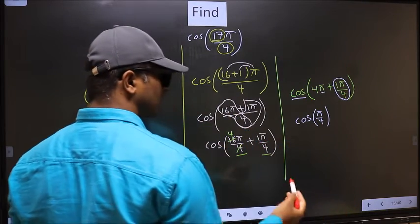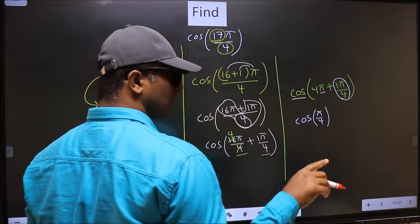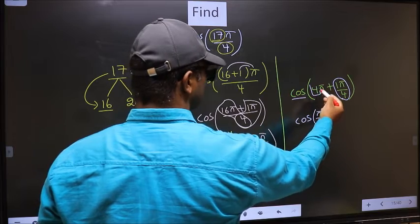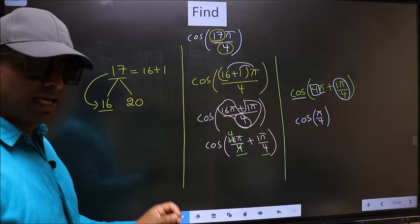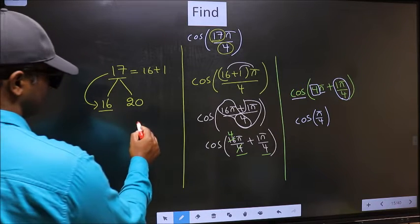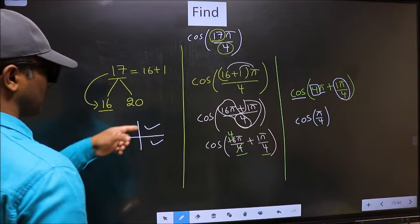Now the question arises, will we get here plus or minus? To answer that, you should look at the number before pi, which is 4. And 4 is even. And all the even multiples of pi, they lie either in the first or in the fourth quadrant.